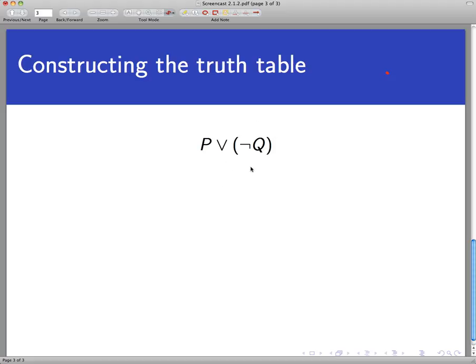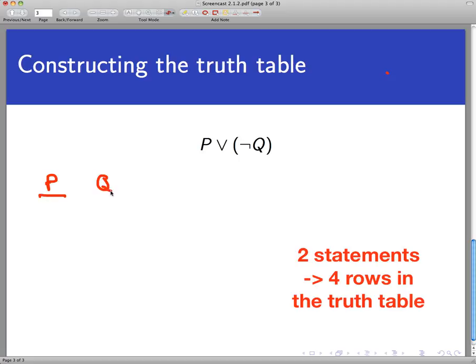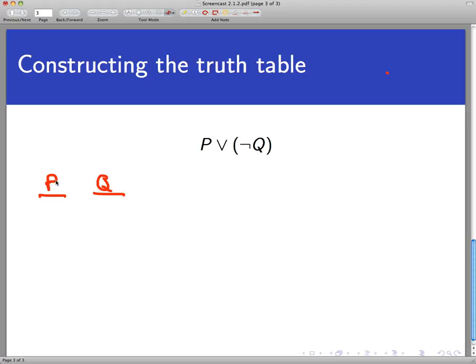Since there are two statements here, we want to look at all the possible combinations of those truth values, and there are four of those. Let's list those out. I'm going to make a column for P and a column for Q. In each one I want to list all the possible eventualities of whether P is true or Q is true. We could have P and Q both true. We could have P true and Q false. We could have P false and Q true. And we could have them both false. So there are the four possible combinations of truth values of P and Q.